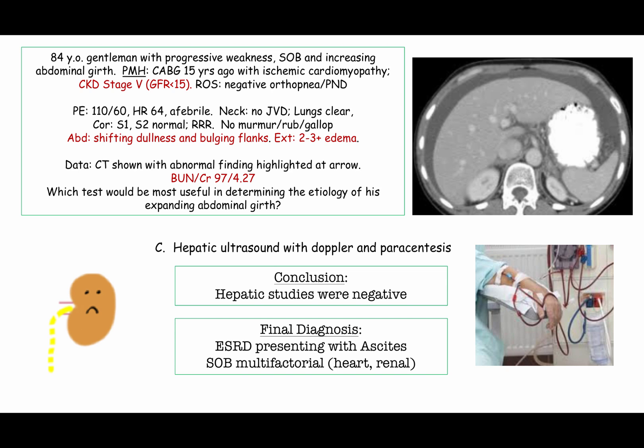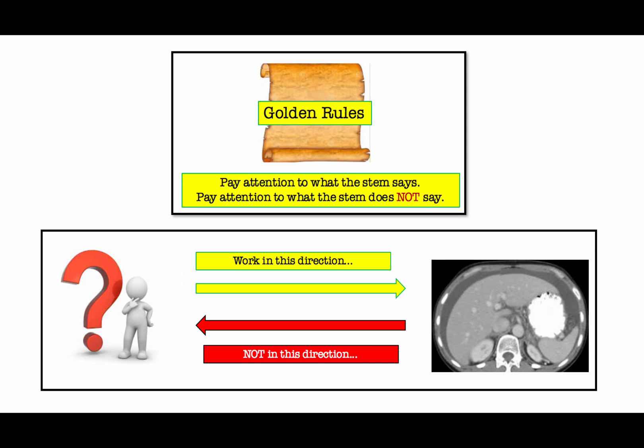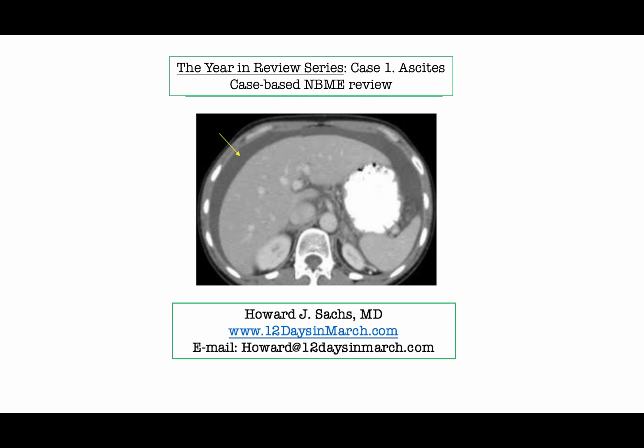As for his shortness of breath, it was multifactorial in nature, including both underlying cardiac and renal disease. Whereas this was an unusual presentation for end-stage renal disease, the discussion and thought process allowed us to consider a broad differential and diagnostic approach, highlighting the interface between clinical care and the information you need to know for the boards. We also covered a couple of the golden rules on managing USMLE Step 1 questions. That concludes this first edition of the Year in Review.